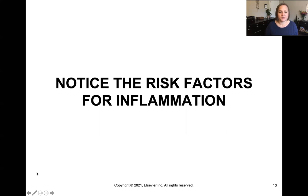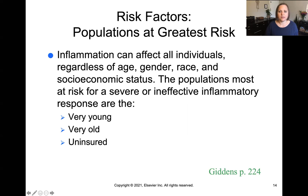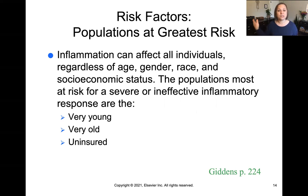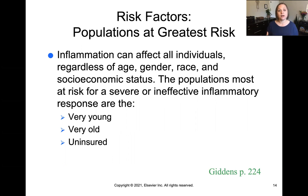Let's talk about the risk factors for inflammation. In terms of populations at greatest risk, it's the very young, the very old, and also the uninsured. They don't always seek medical care as soon as they need it because they're afraid of the cost. By the time they do seek care, it's almost too late. Especially in terms of chronic inflammation, things like end-stage kidney disease, heart attacks, and strokes are the endpoints of chronic inflammation that has gone unchecked.